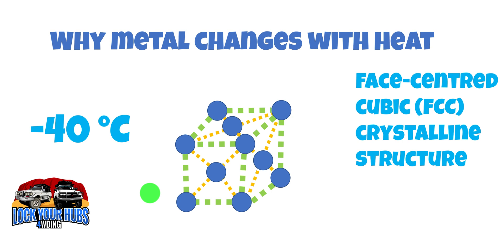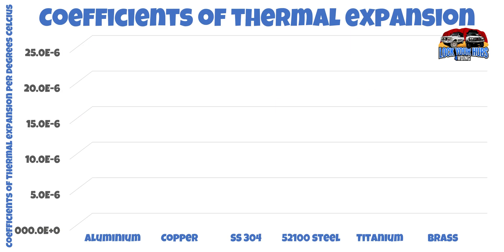This is called the coefficient of thermal expansion. Let's have a little further look at that. Now let's have a look at the coefficient of thermal expansion for a couple of various common metals. So firstly, aluminium, 23.6, but you'll notice that's 10 to the negative 6.